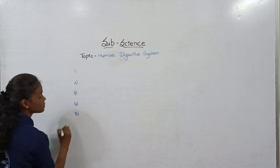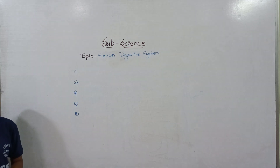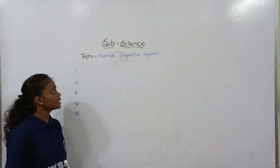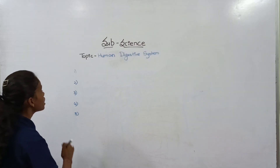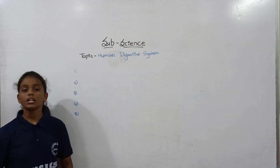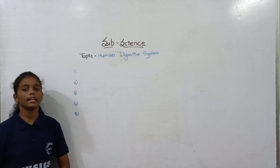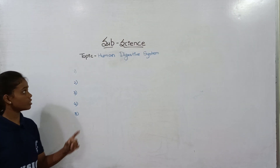These 5 steps are: ingestion, digestion, absorption, assimilation, and egestion.